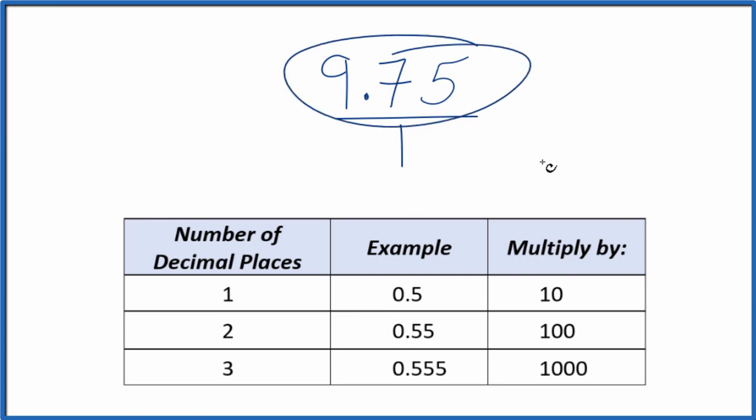Now we need to get this 9.75 to be a whole number. Since we have two decimal places after the decimal point, we're going to multiply this by 100. We multiply by 100, we get 975, and that's our whole number.